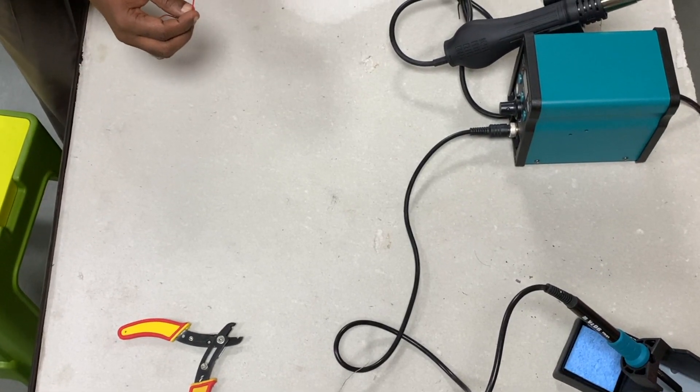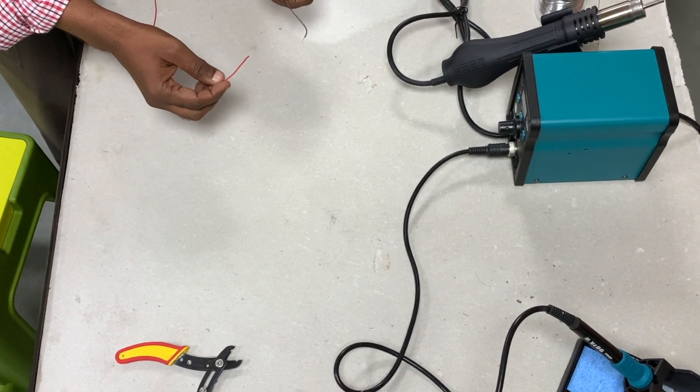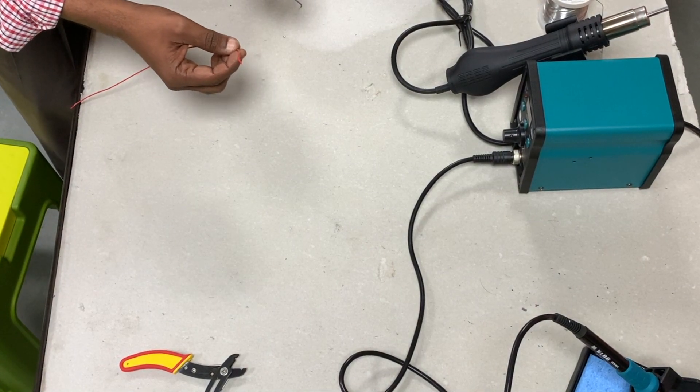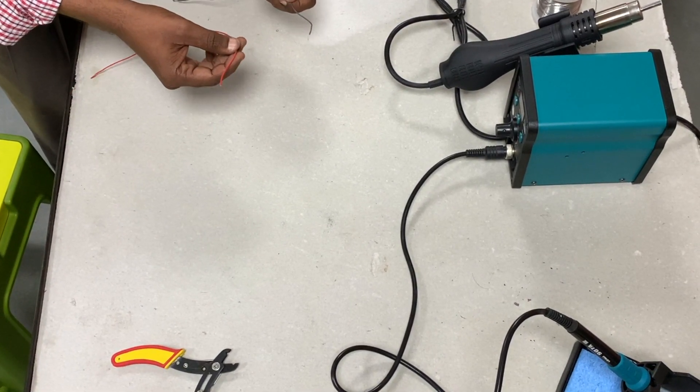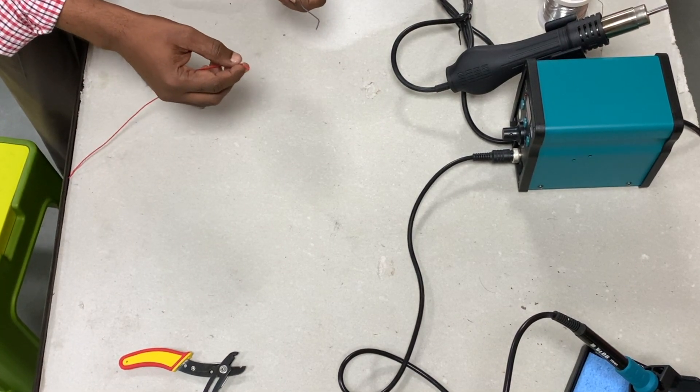Alright, so now I'm going to show you how to strip the wires, do soldering, and then do heat shrink tubing on the soldered wire.